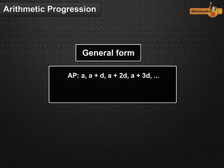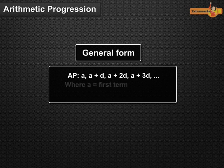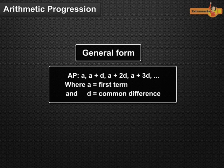Arithmetic progression can also be written as A, A plus D, A plus 2D, A plus 3D and so on. Where A is the first term and D is the common difference. This is called the general form of an AP.